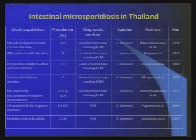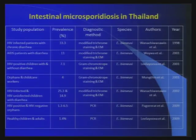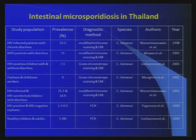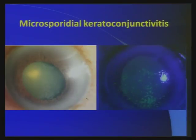Enterocytozoon is the most common one. This is a prevalence study of microsporidiosis in Thailand, and you can see it is up to 30–33%, about one-fourth of them. Now you can use PCR, which gives you a more definitive diagnosis — not just for intestinal microsporidiosis.